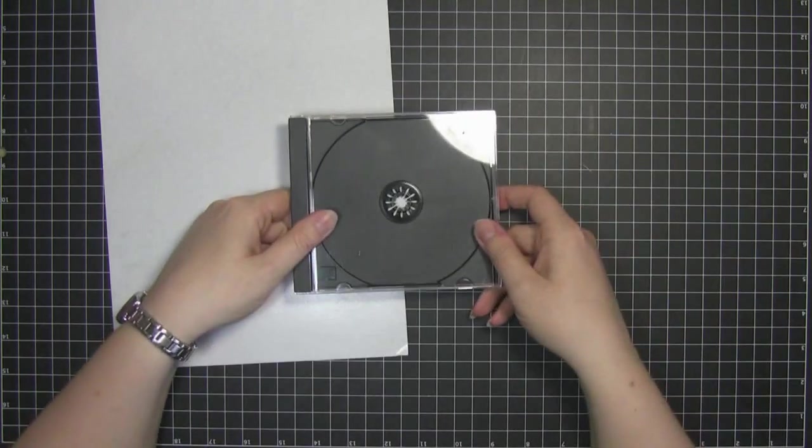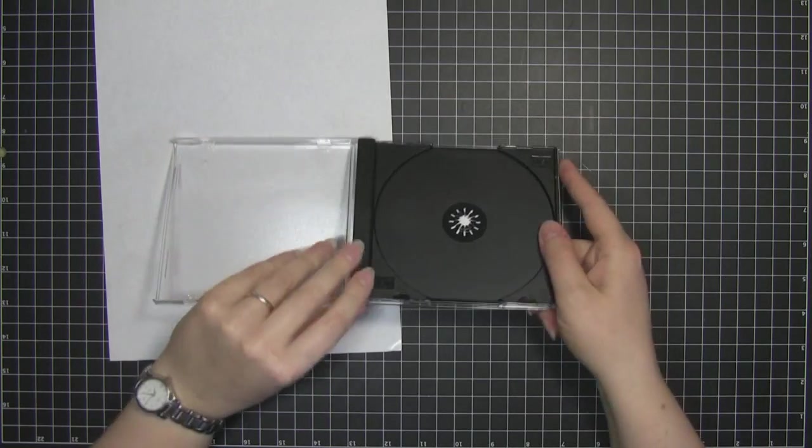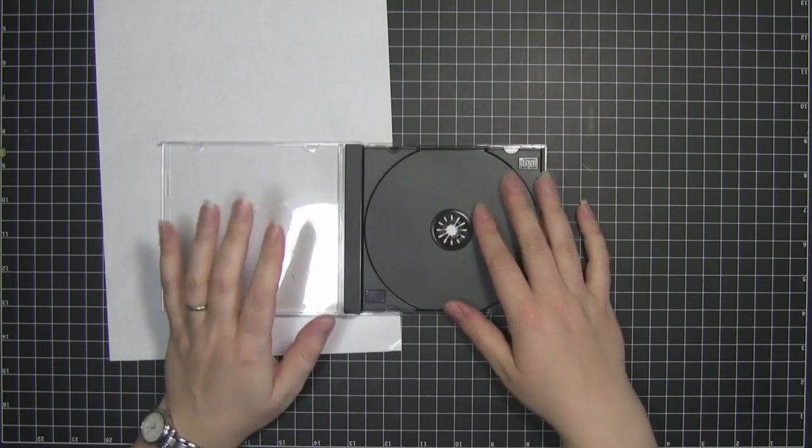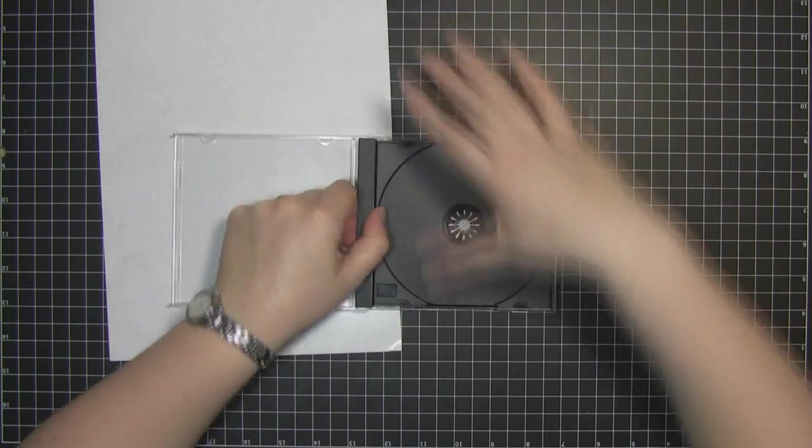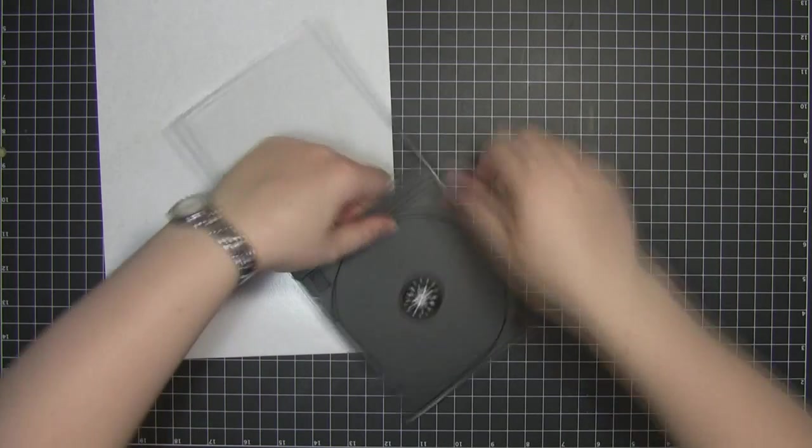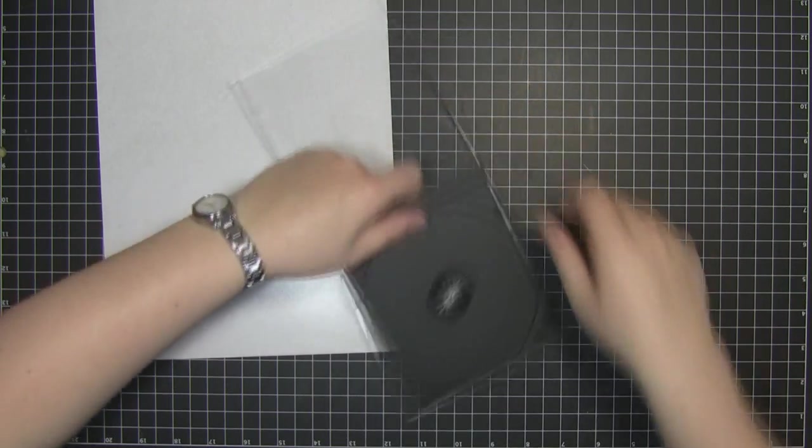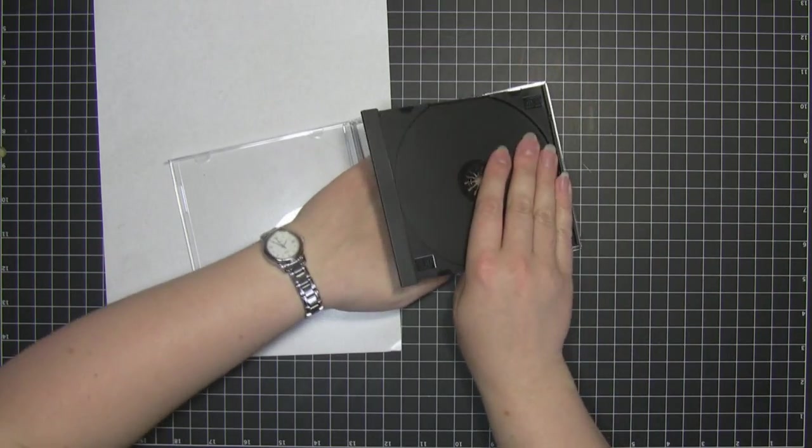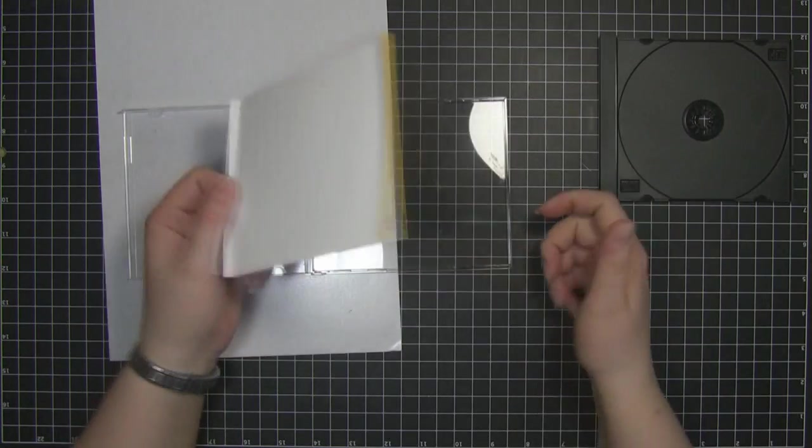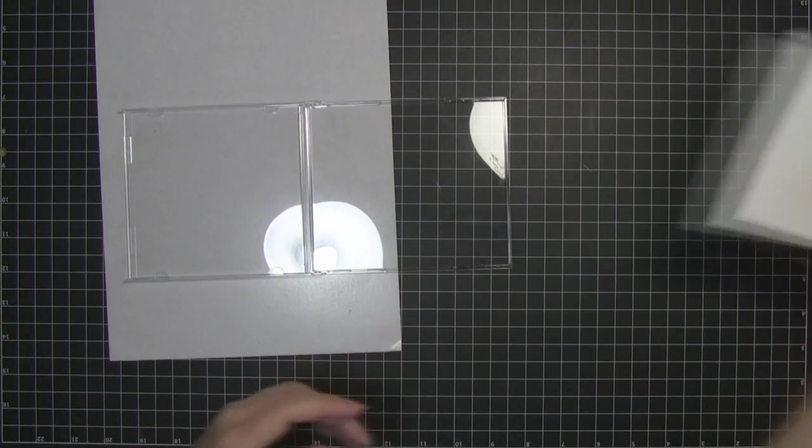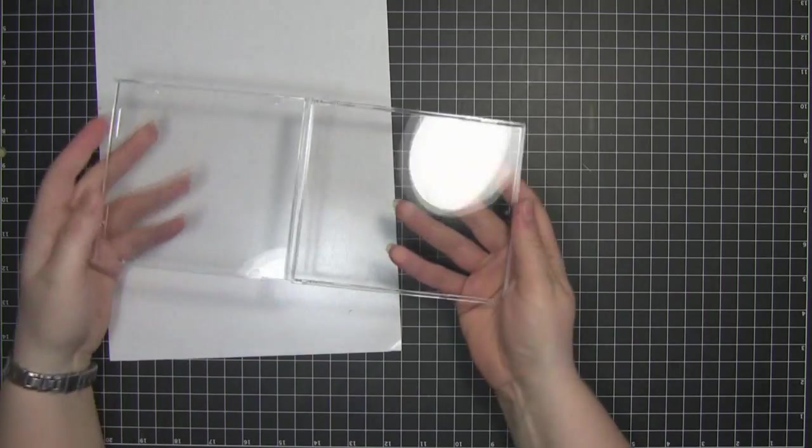And all I do is get an old CD case, take out all of the CD and all of the innards. I also, this is a bit tough to do, but I also pull out this bit, the plastic insert as well. I can remove that paper backing as well. So I'm just left with the clear box.